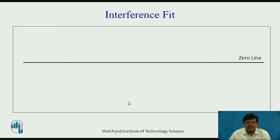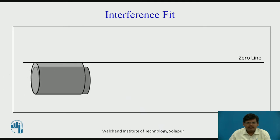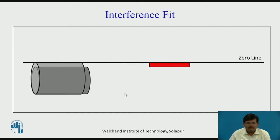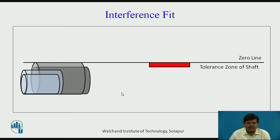Consider this as the zero line — the datum line with respect to which we measure the size of the hole or shaft. This is the maximum size of the shaft and this is the minimum size of the shaft; the gap between these two is the tolerance. The red band visible on the screen is the tolerance zone for the shaft. Similarly, the maximum and minimum size of the hole are shown, and the gap between them is the tolerance zone for the hole — represented by the yellow band.